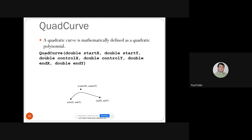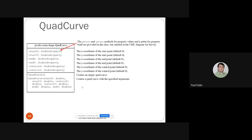Quad curves: a quad curve is a mathematically defined quadratic polynomial. It specifies startX, startY, endX, endY coordinates, and a control point that acts as an attraction point to create the curve. You can see how the quad curve shape is created based on those control X and Y coordinates. You can specify all of these properties and test it in today's lab.